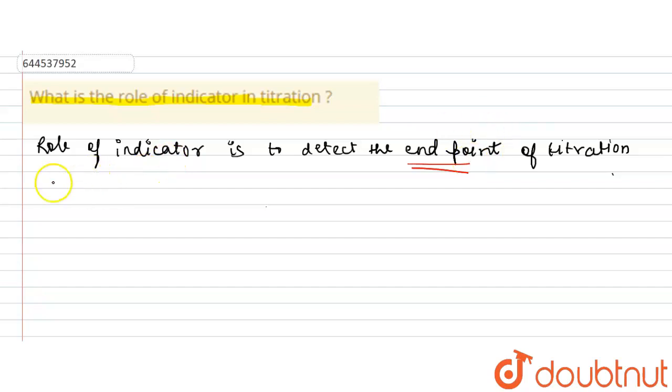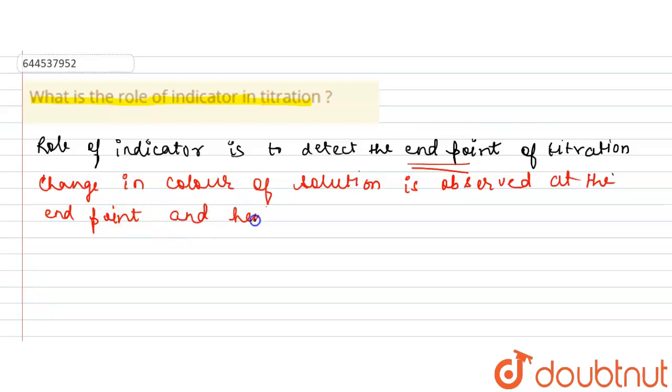So it is used to detect the end point, and change in color of solution is observed at the end point. Hence indicator is used for this role.